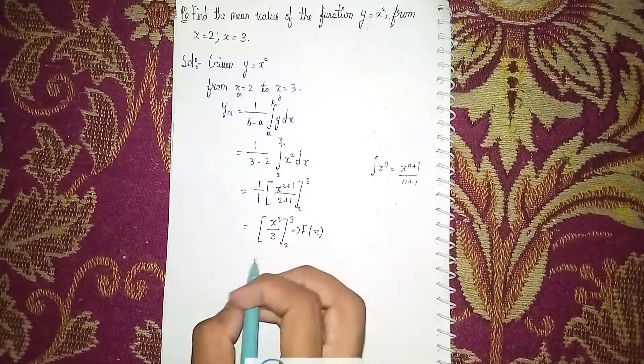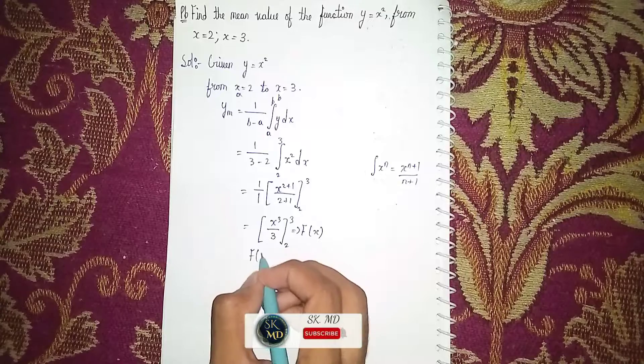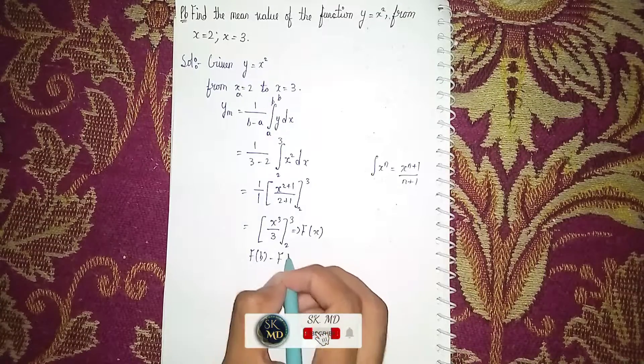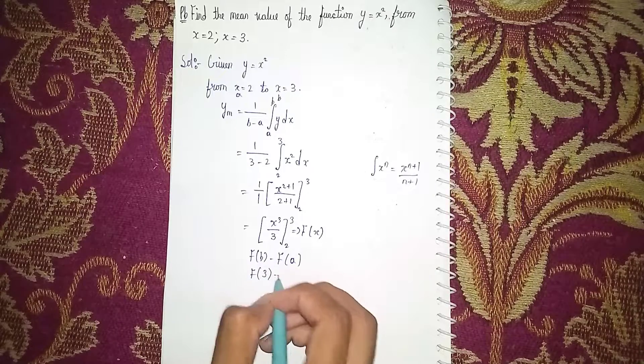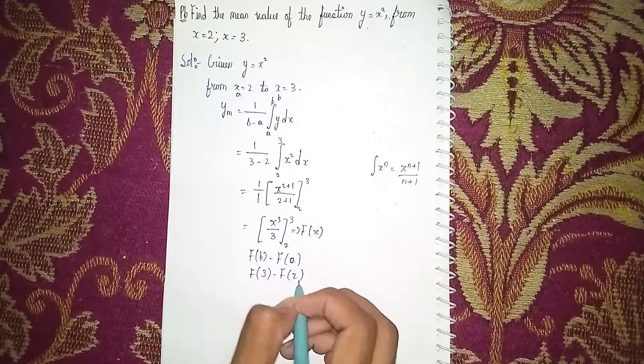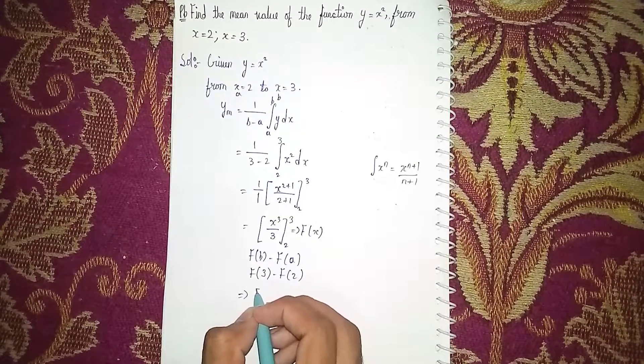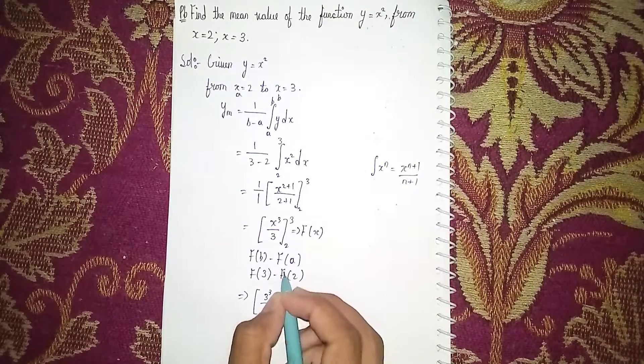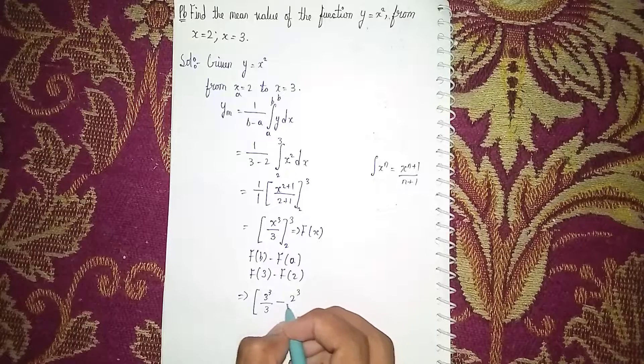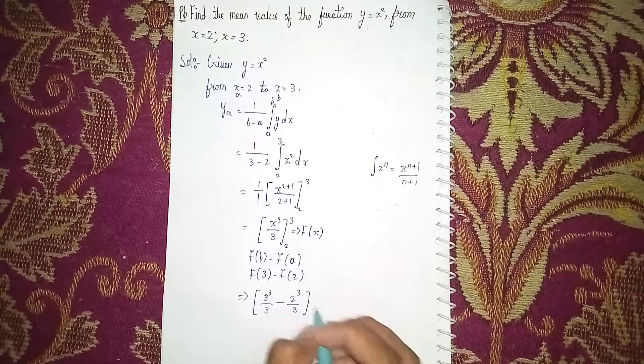Apply the limit means f(b) - f(a). So f(b) - f(a) means the upper limit b is 3, the lower limit a is 2. So it becomes 3³/3 minus 2³/3.